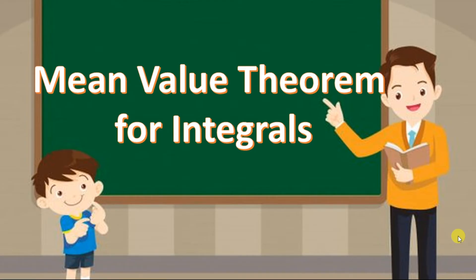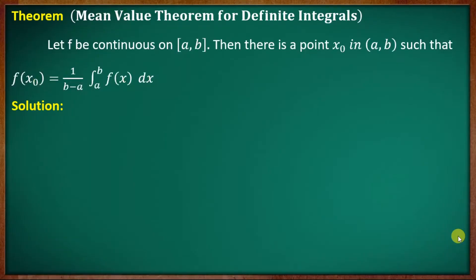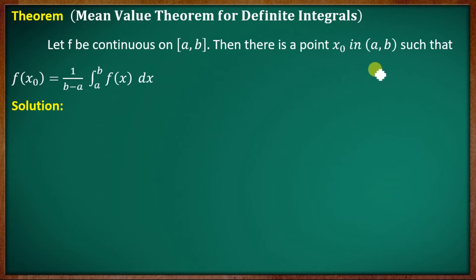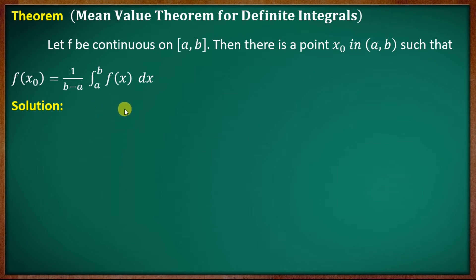Mean Value Theorem for Integrals. Let f be continuous on closed interval [a, b]. Then there is a point x₀ in the open interval (a, b) such that f(x₀) equals 1 over (b minus a) times the integral from a to b of f(x) dx. We will now provide the proof.